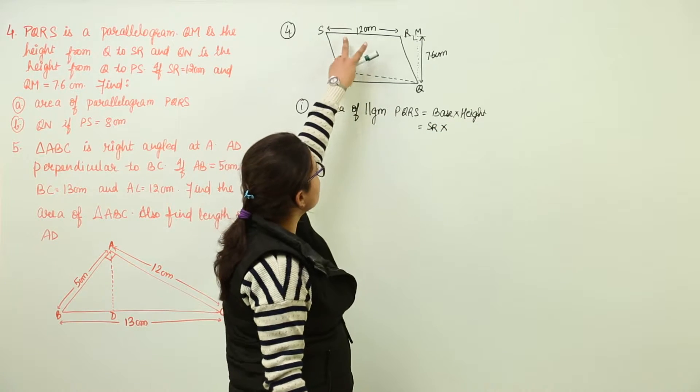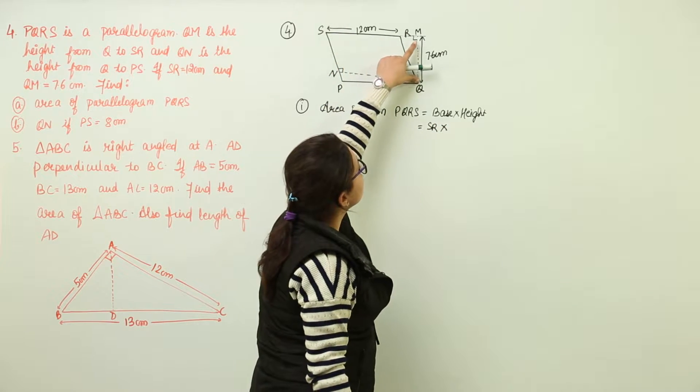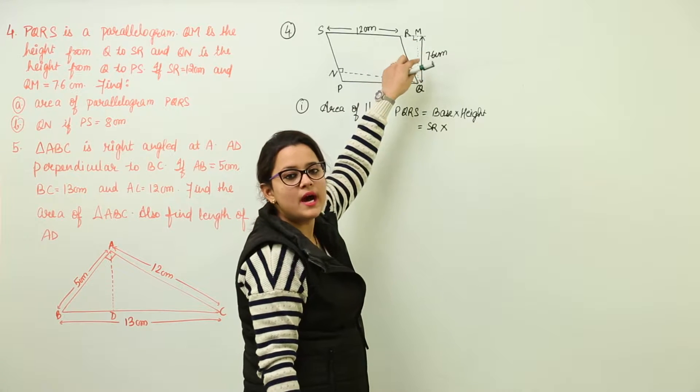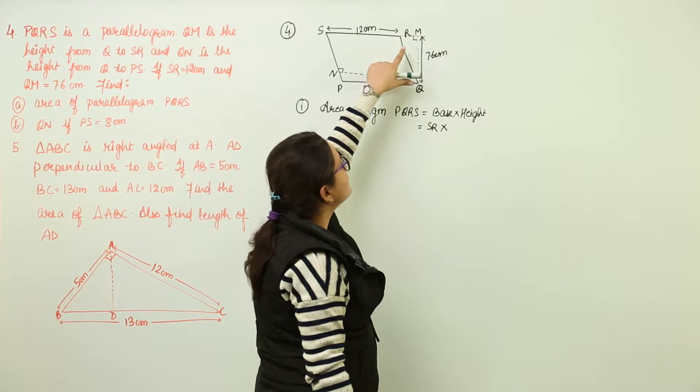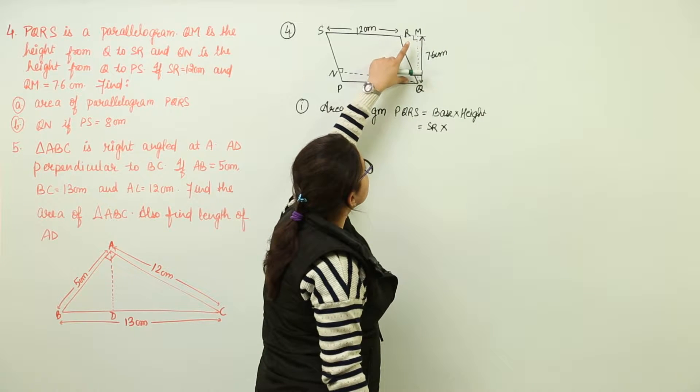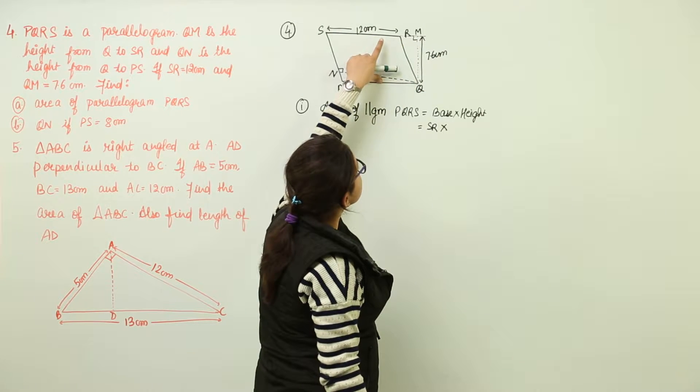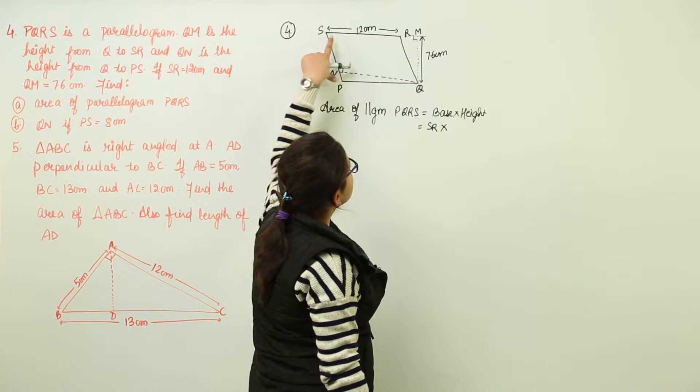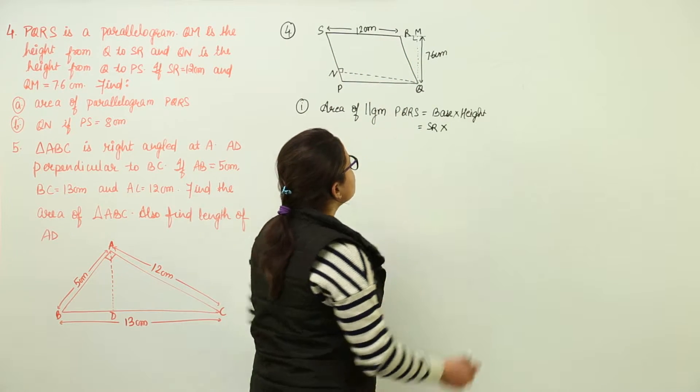the height for SR is going to be QM only. As I discussed with you, height is not bothering that it is going out of the shape or not because the point Q is going to be at the same distance from SR all over. So we can represent QM as the height.